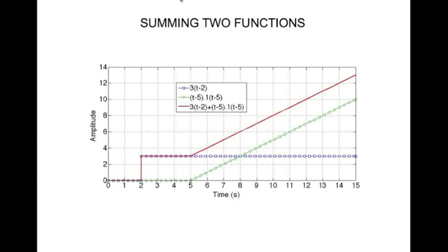Now here we look at summing two functions. We have two functions here originally and then we sum them together. So you have a step of amplitude 3 that starts at t minus 2, that's a function represented by these blue squares.